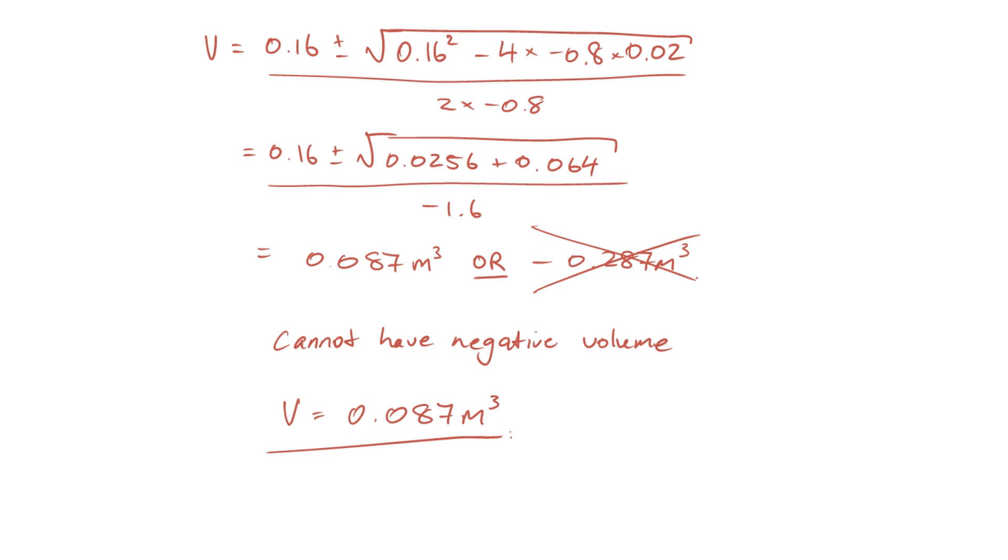We could now go back and substitute that into our expression for CA2 if we were also interested in knowing what's the concentration of the stream between the two reactors, but we weren't asked for that in the question statement. And that's it.